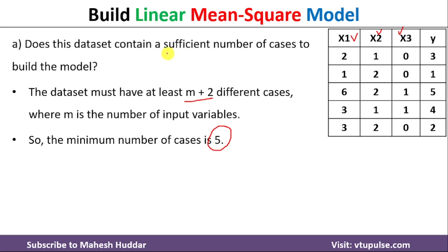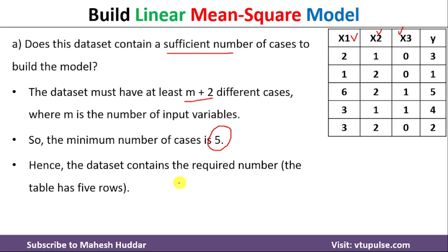Then we can say it is sufficient to build the model. In this case, counting the instances, we have 5 instances given to us. That is the reason we can say that the given dataset is sufficient to build the model.